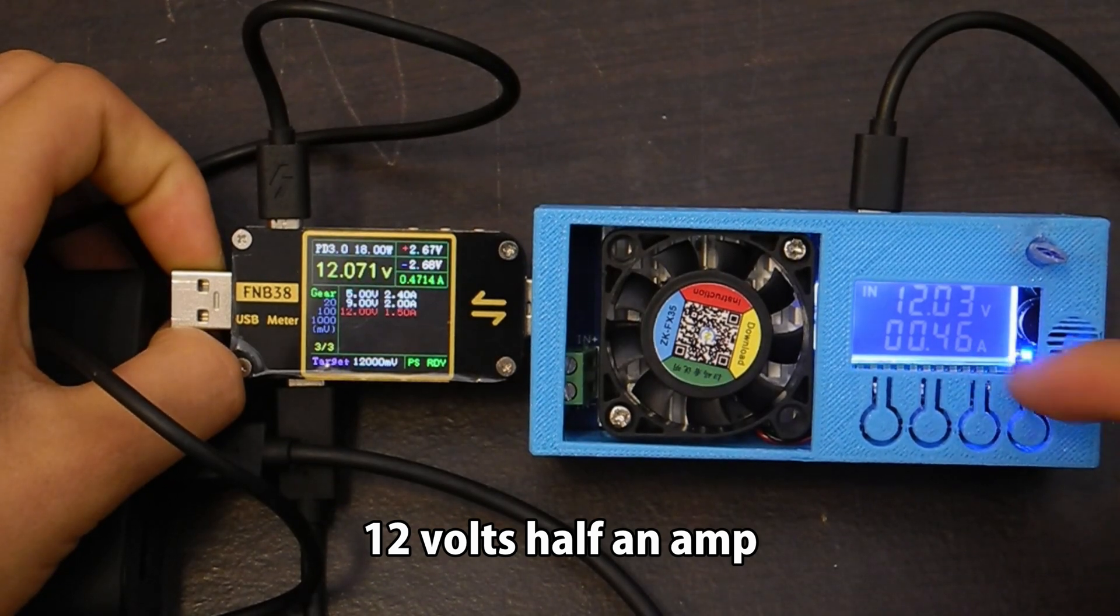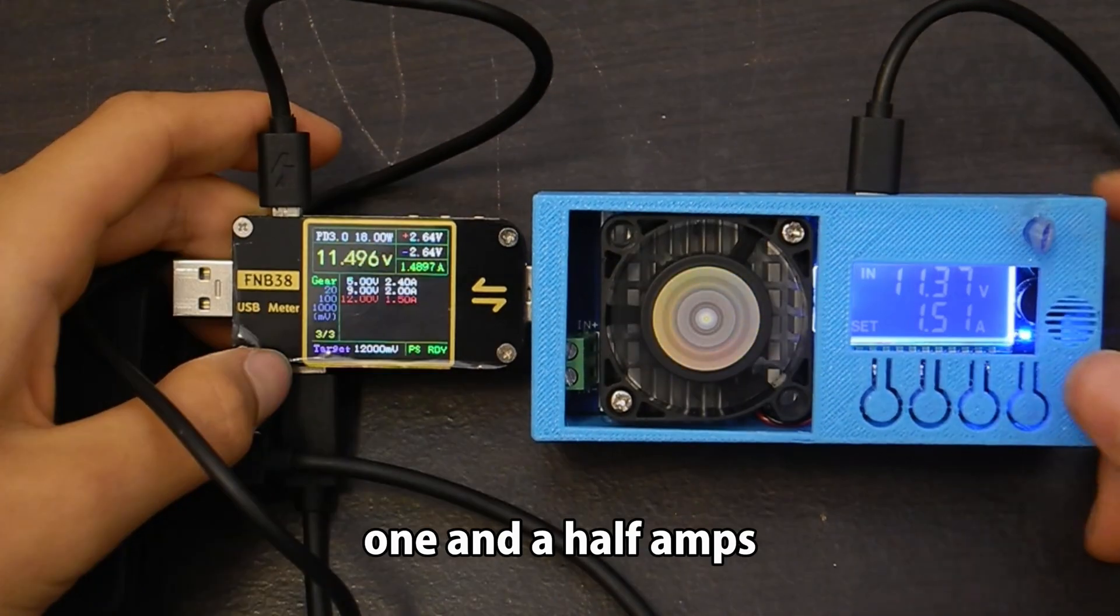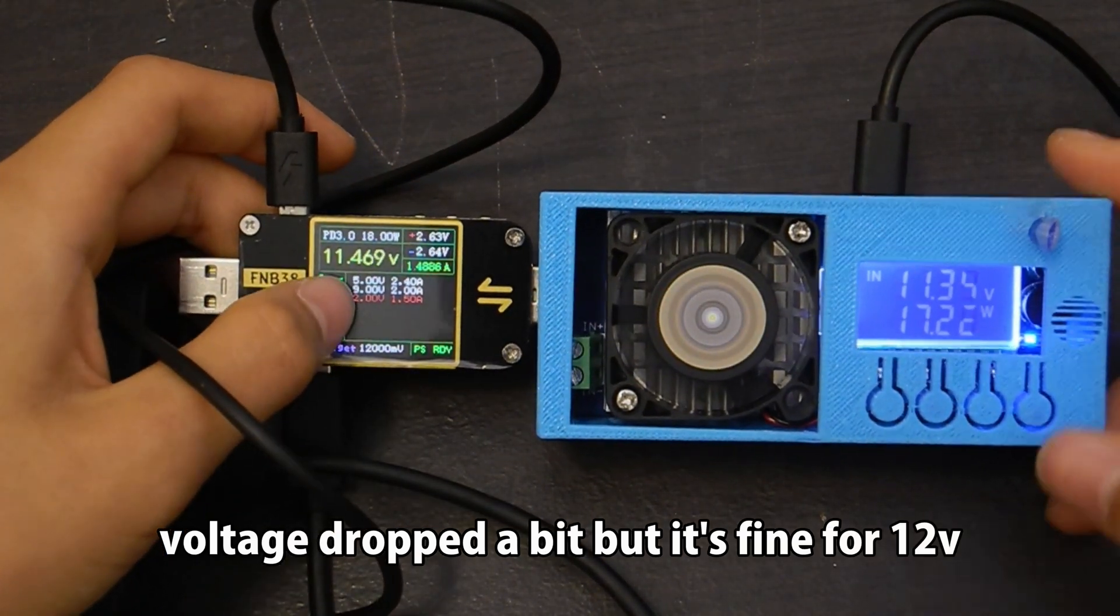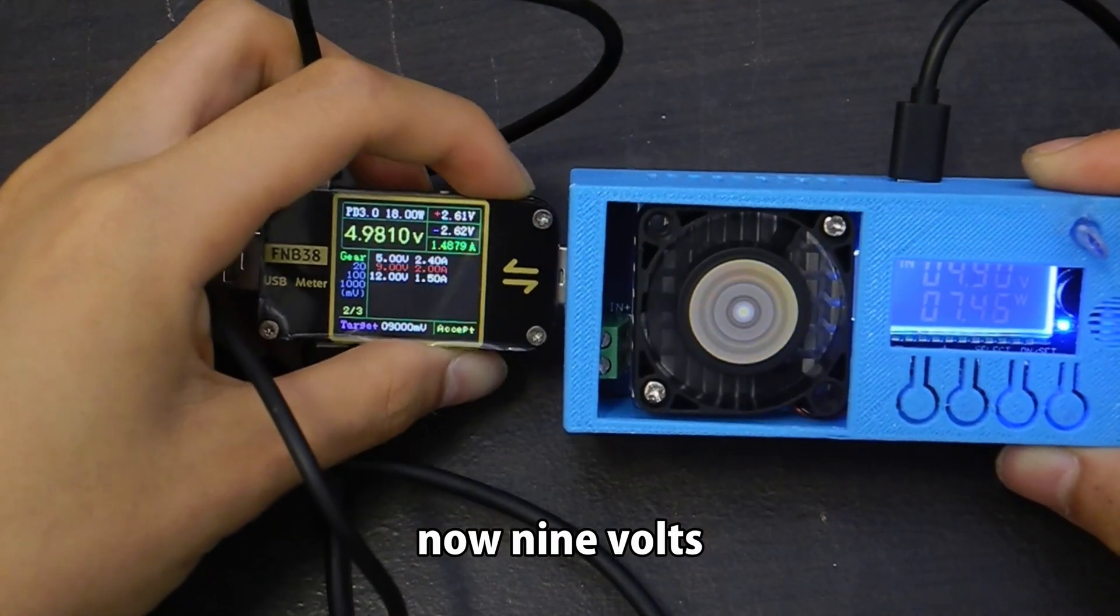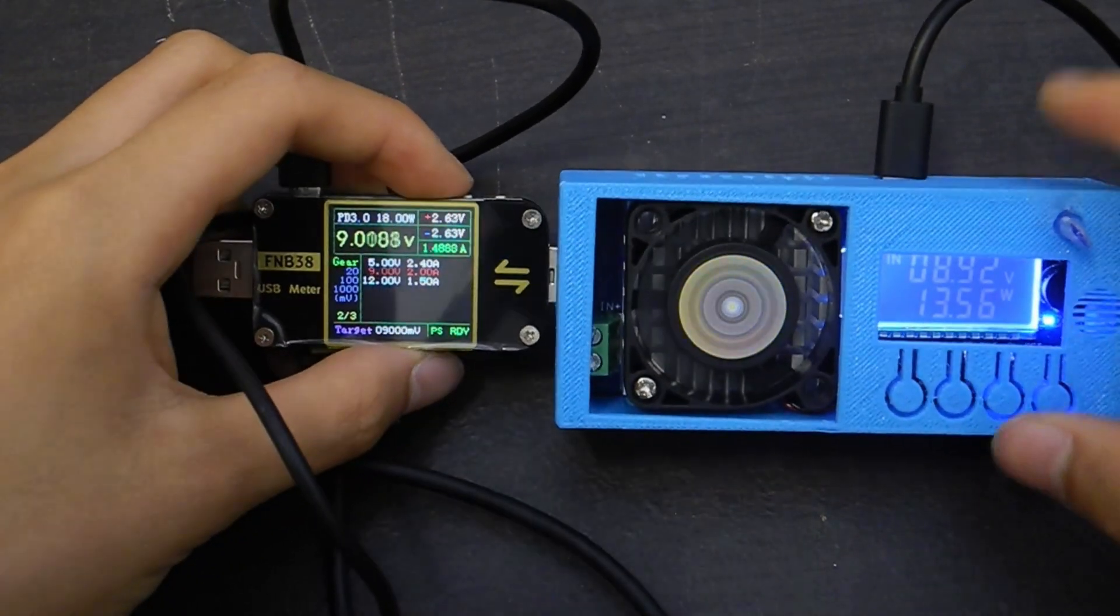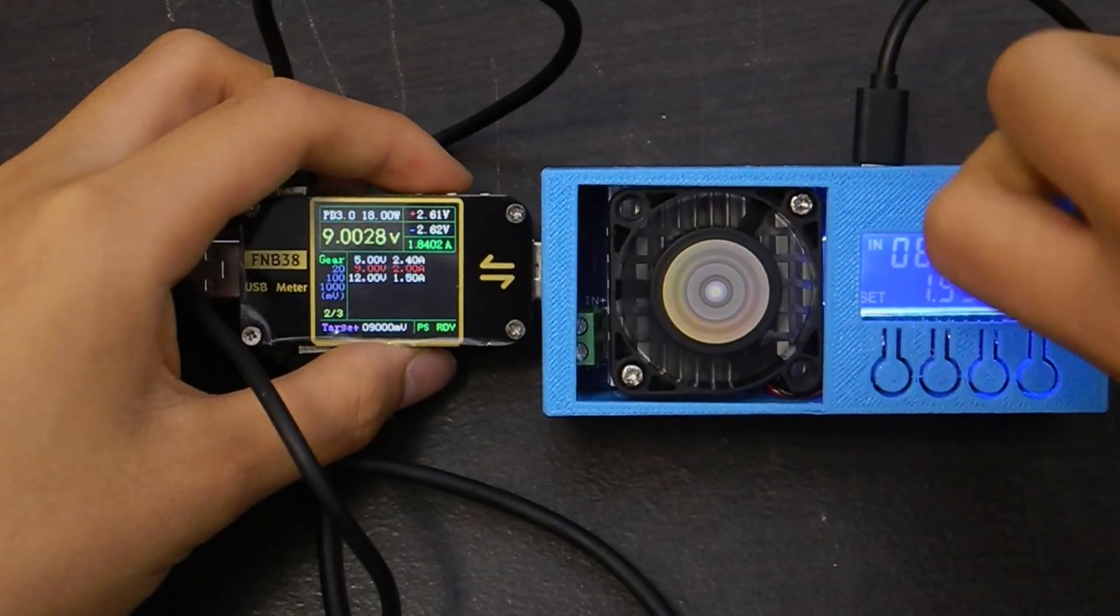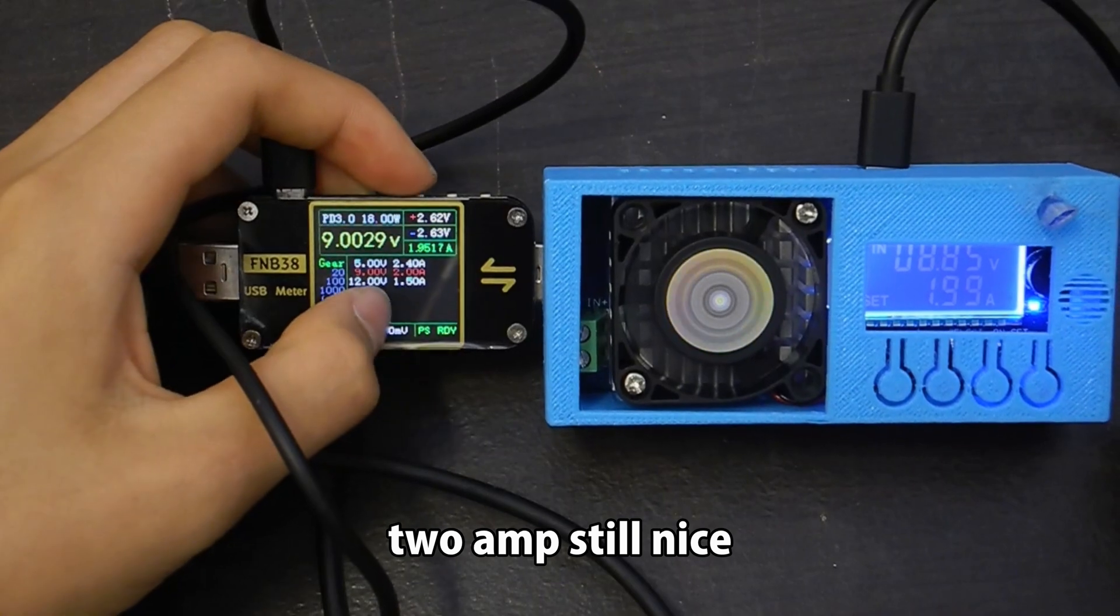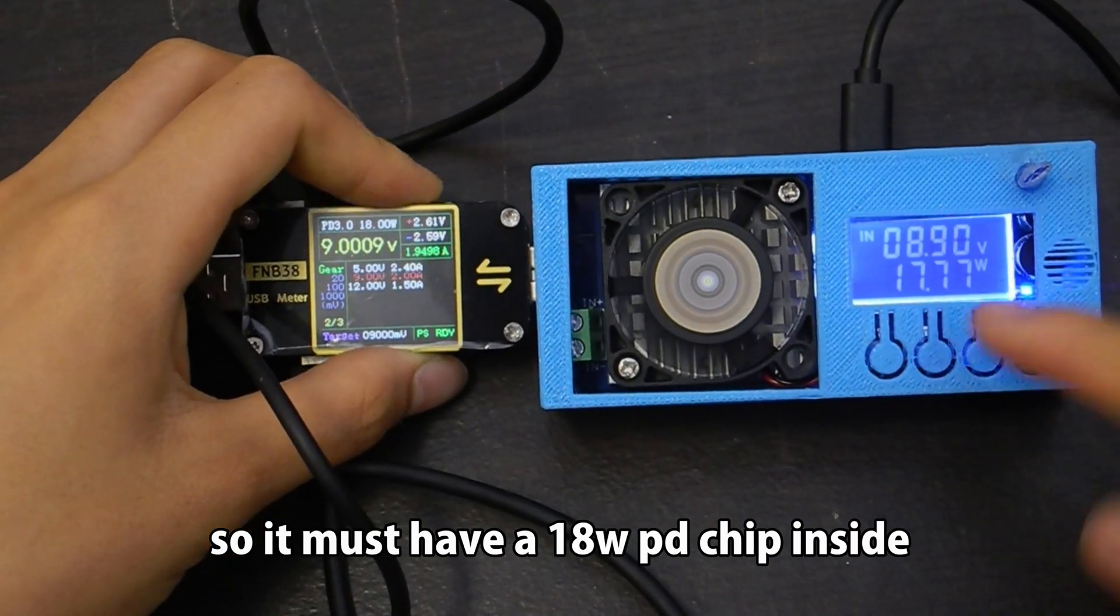Let's test the current capability at different voltages. 12V half an amp. 1A. Voltage dropped a bit but it's fine for 12V. Now 9V. 2A still nice. So it must have an 18W PD chip inside.